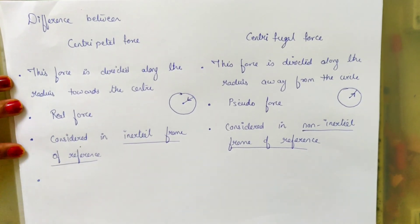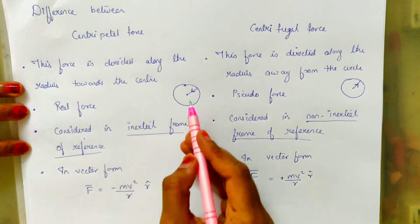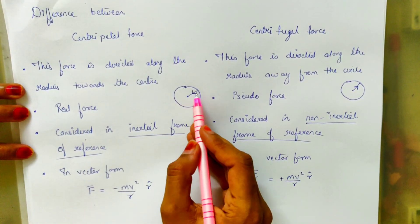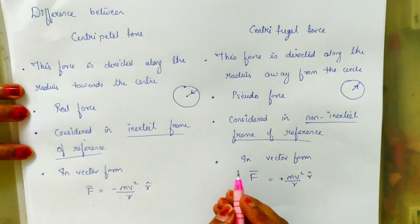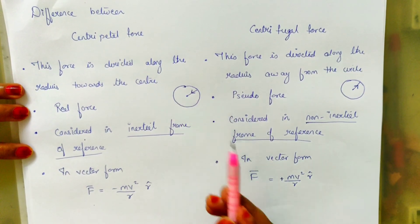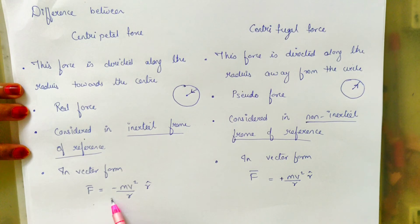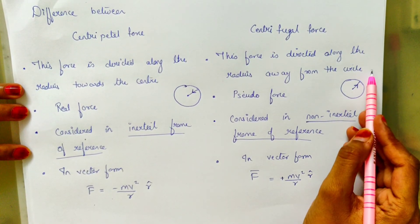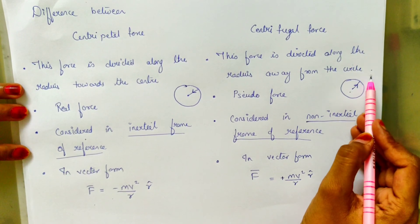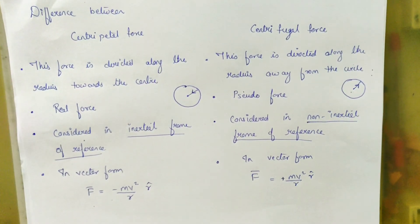And the last point, the fourth point: in vector form, as we can see, the centripetal force is directed inside while the radius vector points outside. So the angle between them is 180 degrees, which gives a negative sign. When we talk about centrifugal force, it is directed outside, and the radius vector is also outside, so they are in the same direction.